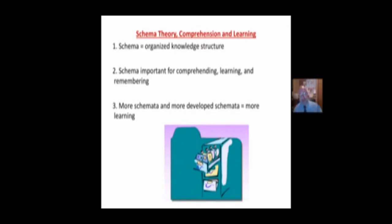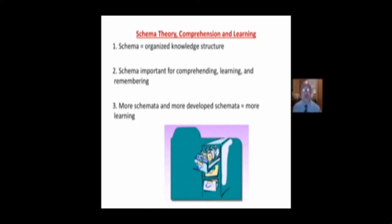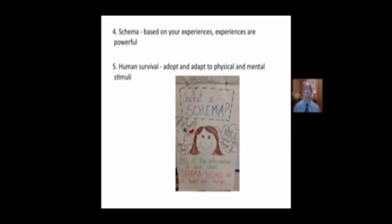The more schemata we have, the more developed our schemata are, the easier it is to learn and to comprehend — both in terms of reading comprehension and comprehending new theories, ideas, and concepts. The rich get richer, the poor get poorer: the more you read, the more you learn, the more you experience, the easier it is to take in and organize more information. Schema are based on your past experiences, and your personal experiences are powerful.